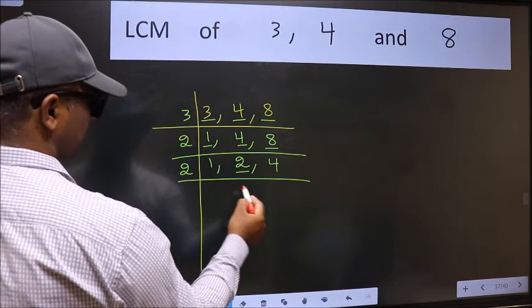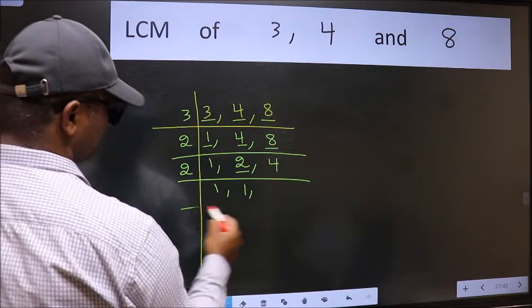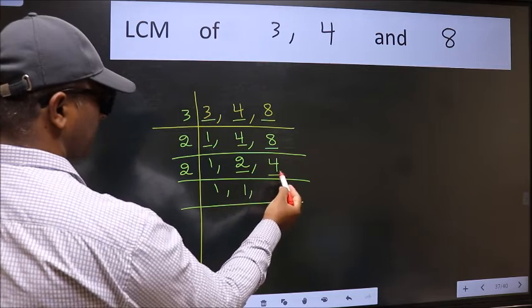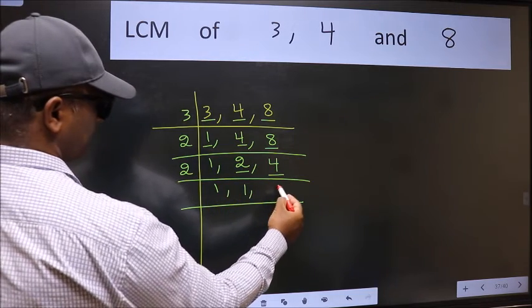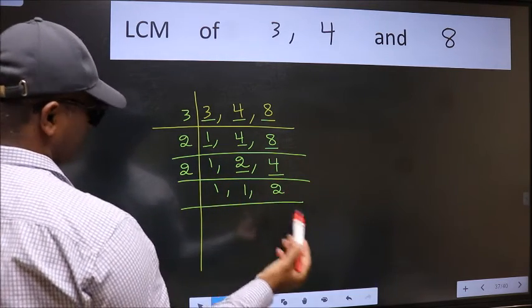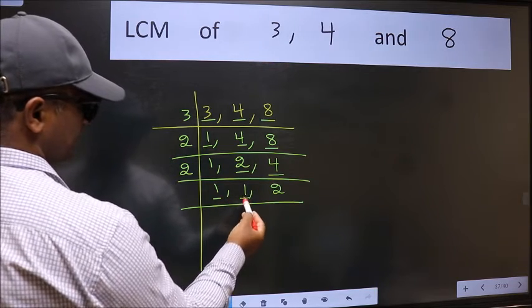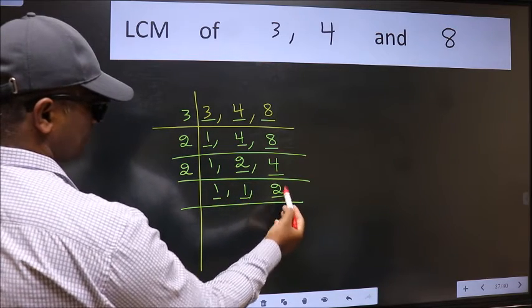Now here we have 2. 2 is a prime number. So 2 1s 2. The other number 4, when do we get 4 in 2 table? 2 2s 4. Now we got 1 here and here. So focus on the next number 2.